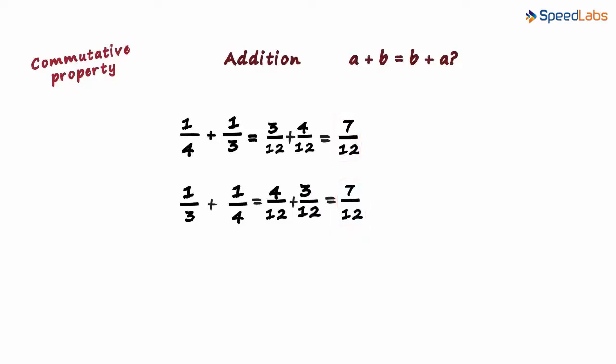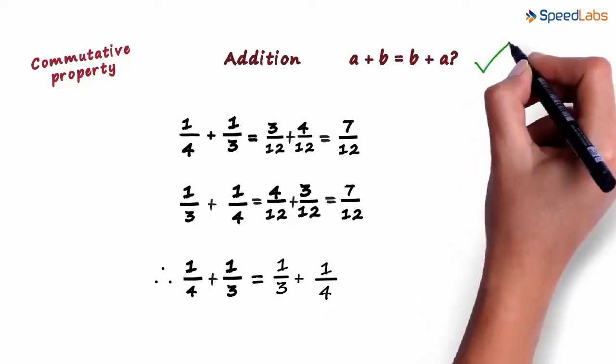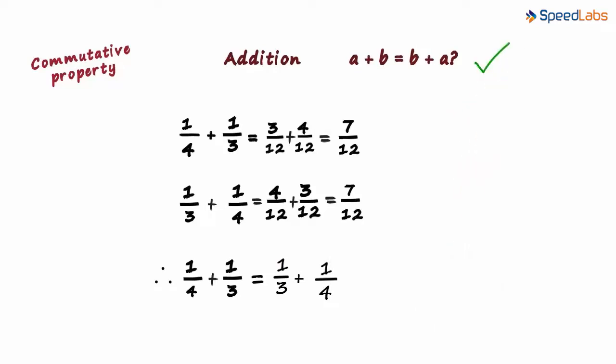For this reason, we can say that 1 by 4 plus 1 by 3 equals 1 by 3 plus 1 by 4. And this will be the case for any two rational numbers. So we can say that the commutative property is satisfied for addition of rational numbers.